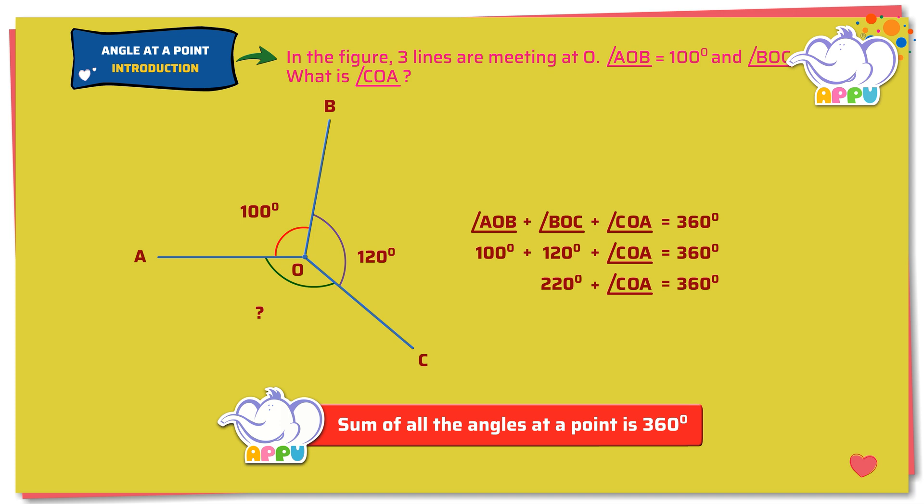Next, we subtract 220 degrees from both sides. We get angle COA equals 360 minus 220. Angle COA equals 140 degrees.